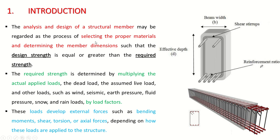may be regarded as the process of selecting the proper materials — for example, what to use for longitudinal bars, transverse bars, the type of concrete, the spacing of stirrups, the number of bars — and determining the member dimensions such as width and depth of the beam, such that the design strength is equal to or greater than the required strength. Design strength is basically the capacity of the structure and the required strength is the demand.